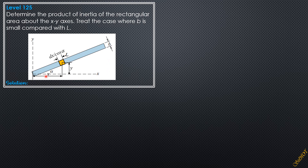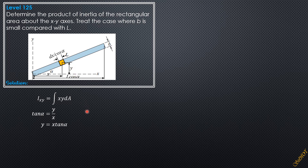So Ixy equals the integral of x·y·dA, where y = x·tan α and the variable of integration x goes from 0 to l·cos α. Substituting, x is just x, y is x·tan α, and the differential area is b times dx over cos α. Therefore Ixy = integral from 0 to l·cos α of x · (x·tan α) · (b·dx/cos α).